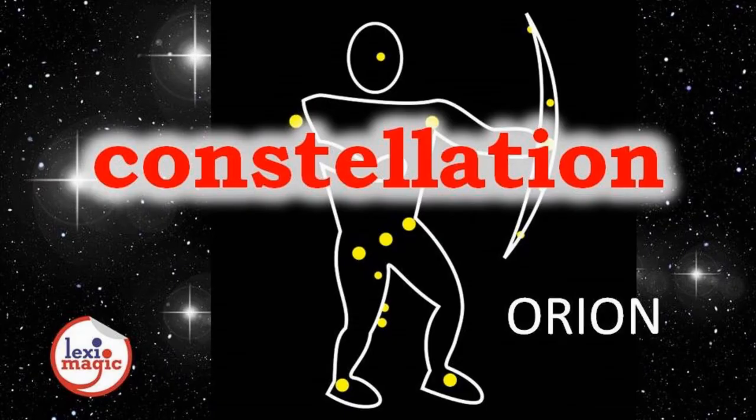Constellation is a group of stars that form a recognizable pattern in the sky. The Orion, or the Hunter, constellation is shown here.